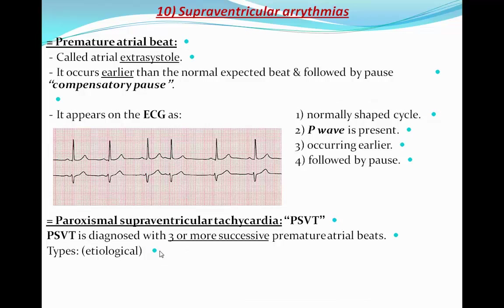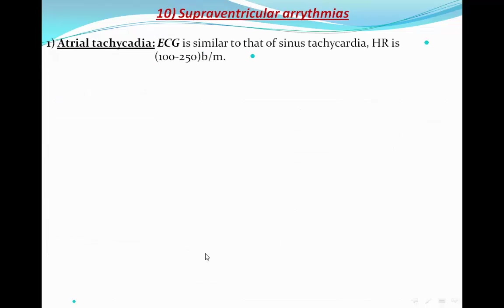Paroxysmal supraventricular tachycardia can be diagnosed when there are three or more successive premature atrial beats with a heart rate more than 100 beats per minute. The first type is atrial tachycardia, where the ECG will be similar to sinus tachycardia but with a heart rate of 100 to 250 beats per minute. It is very difficult to differentiate between atrial tachycardia and sinus tachycardia on the ECG.